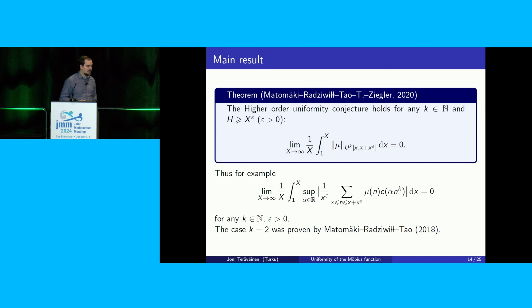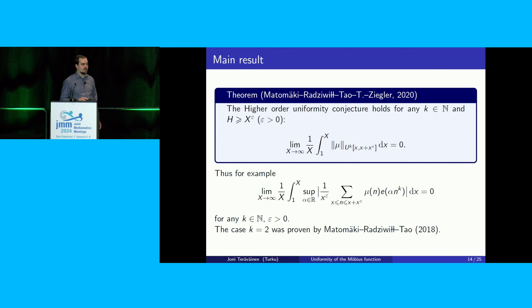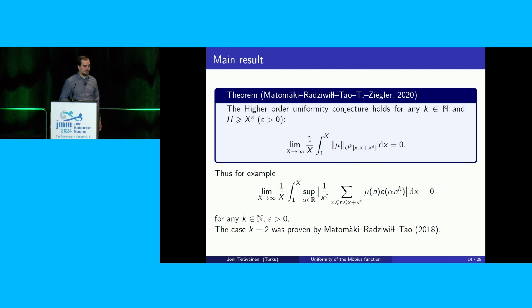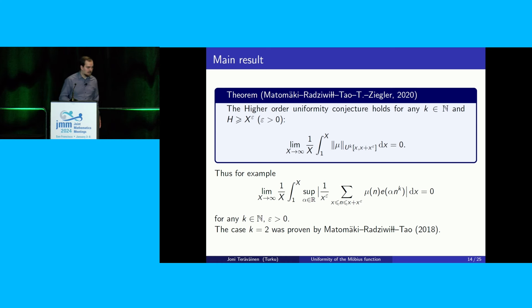Looking at the model case, this says in particular that the short exponential sums of the Möbius function twisted by e^{2πi α n^k} are small, uniformly over α, on almost all short intervals. This is a statement that was earlier proved for k equals 2 by Matomäki, Radziwiłł, and Tao.